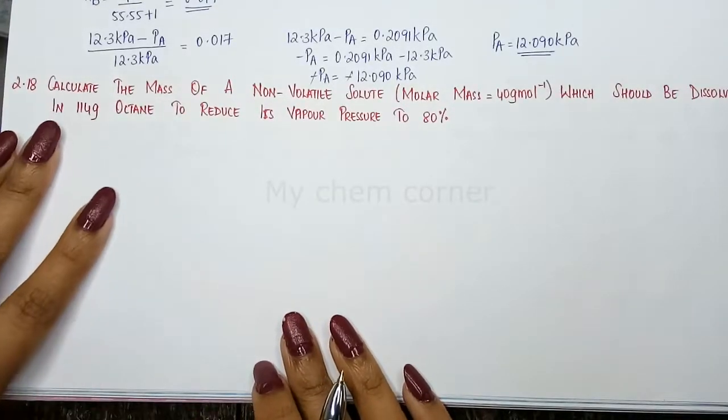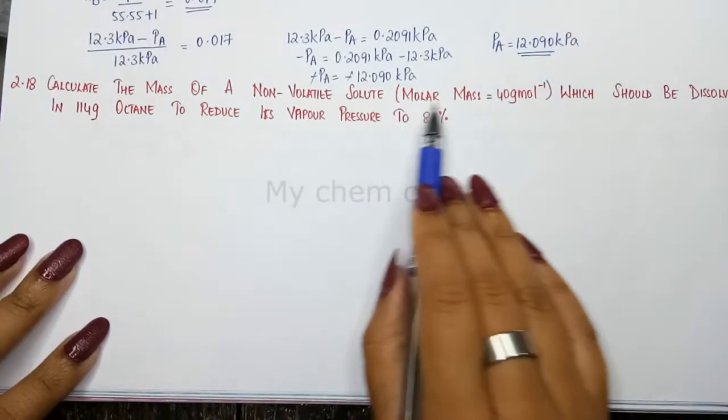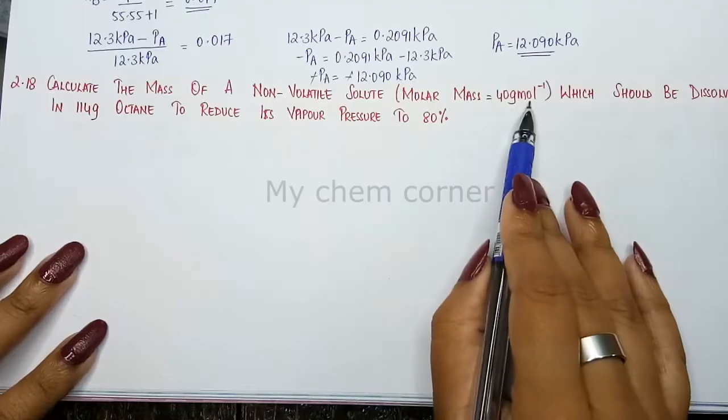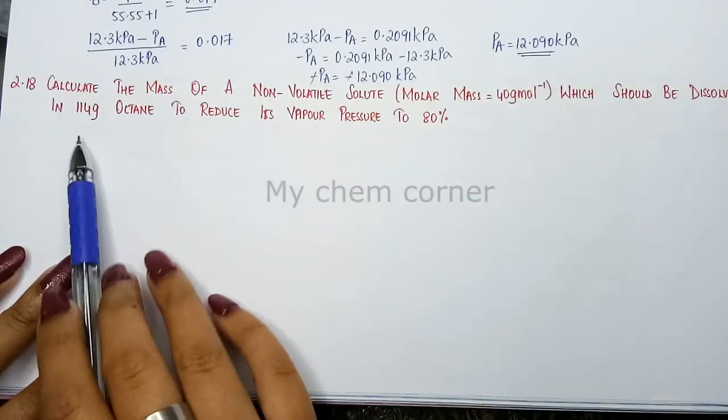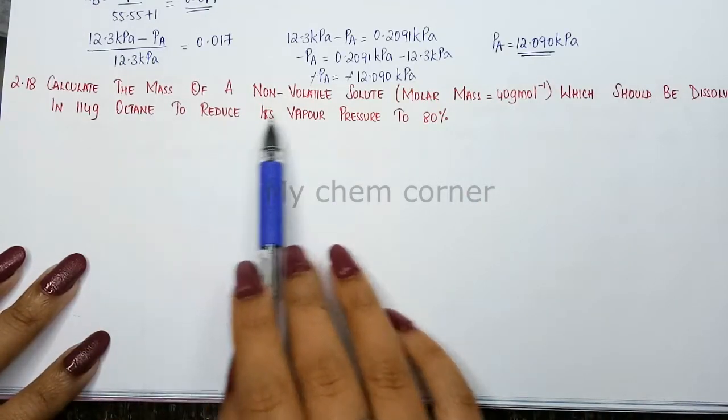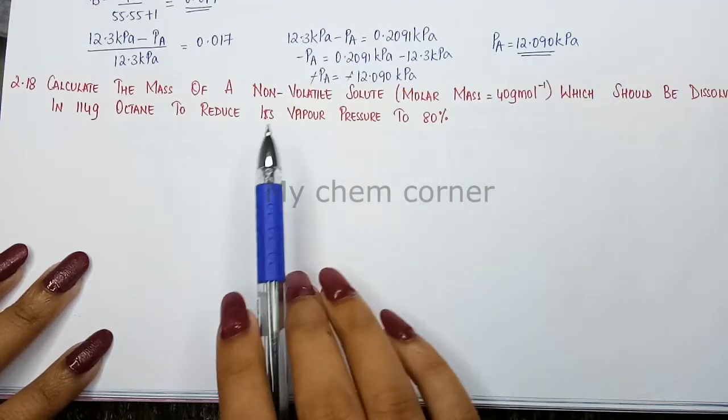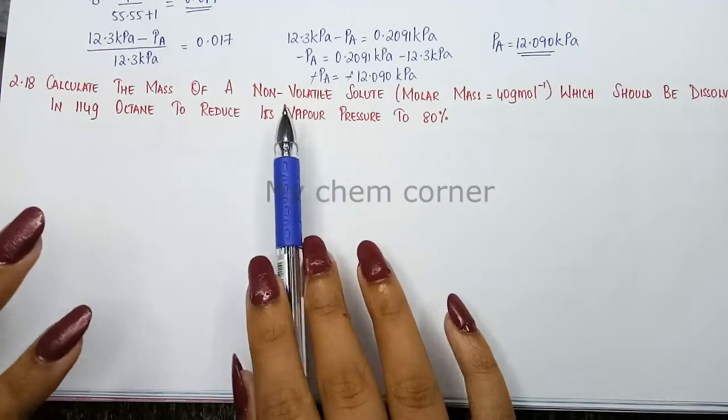Next question: calculate the mass of a non-volatile solute whose molar mass is 40 grams per mole which should be dissolved in 114 grams of octane to reduce its vapor pressure to 80%.